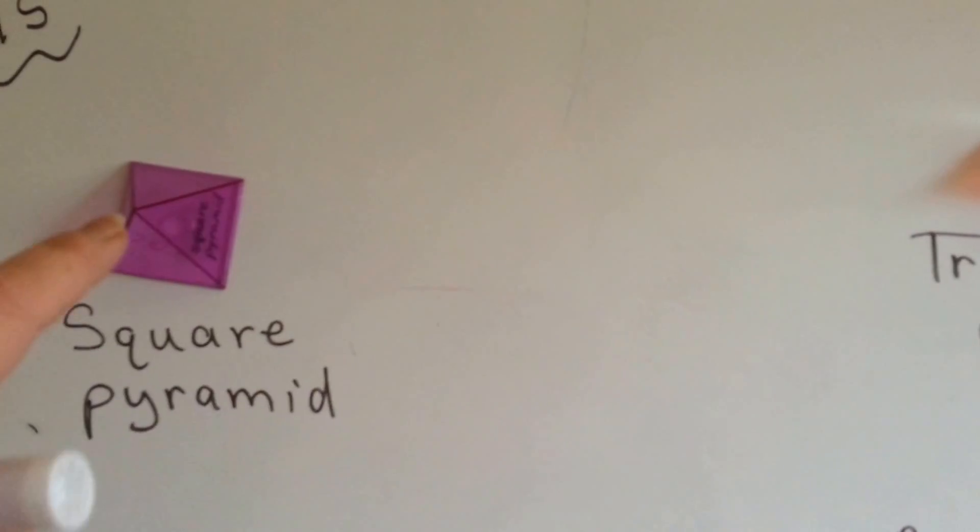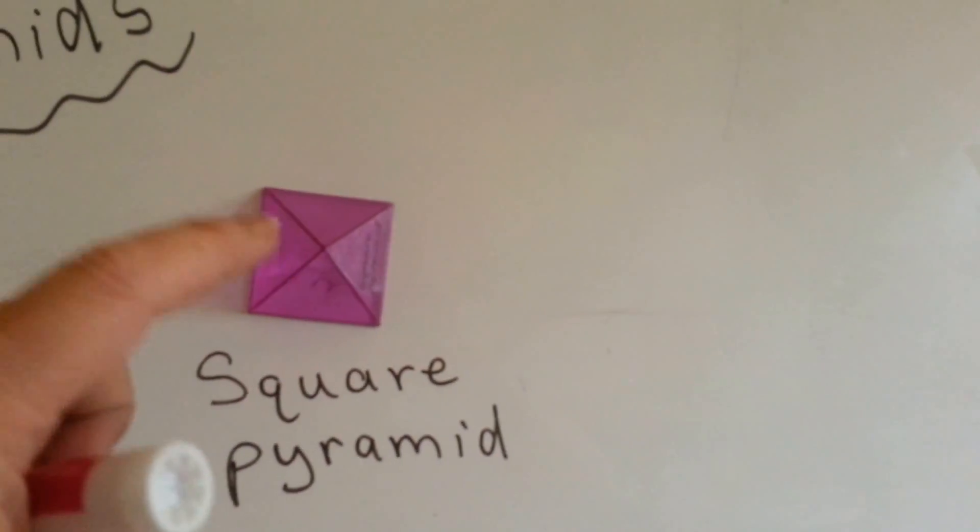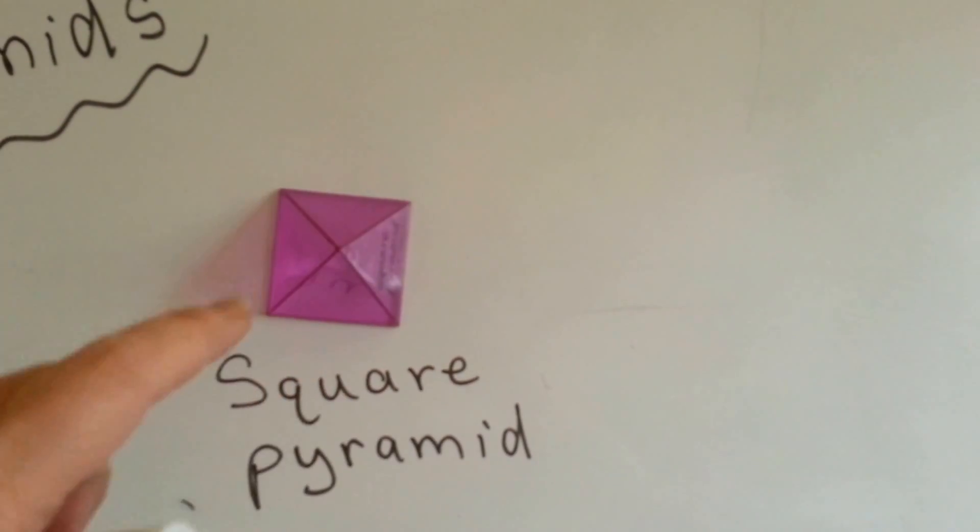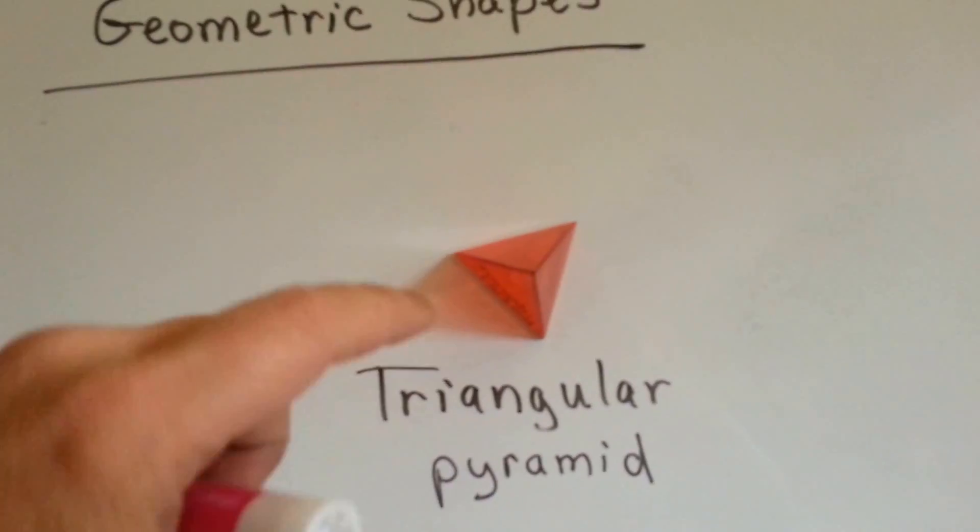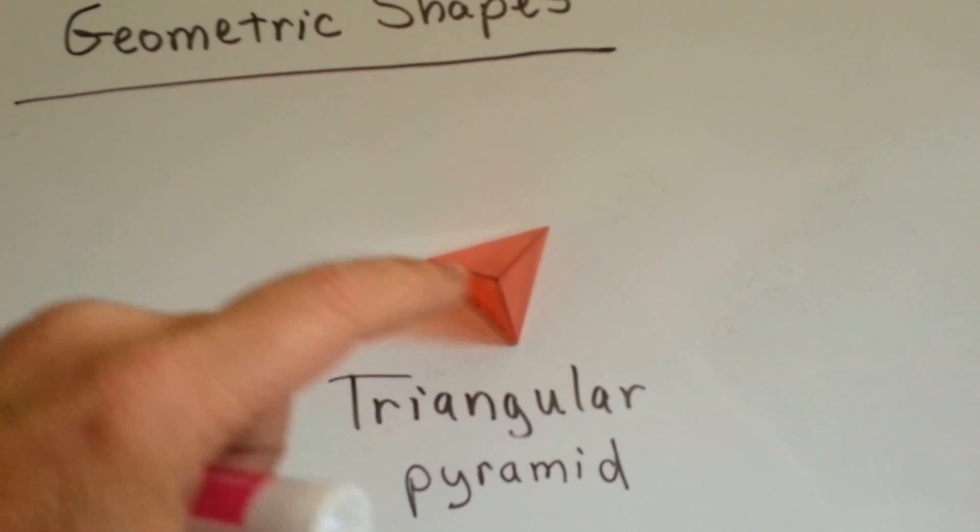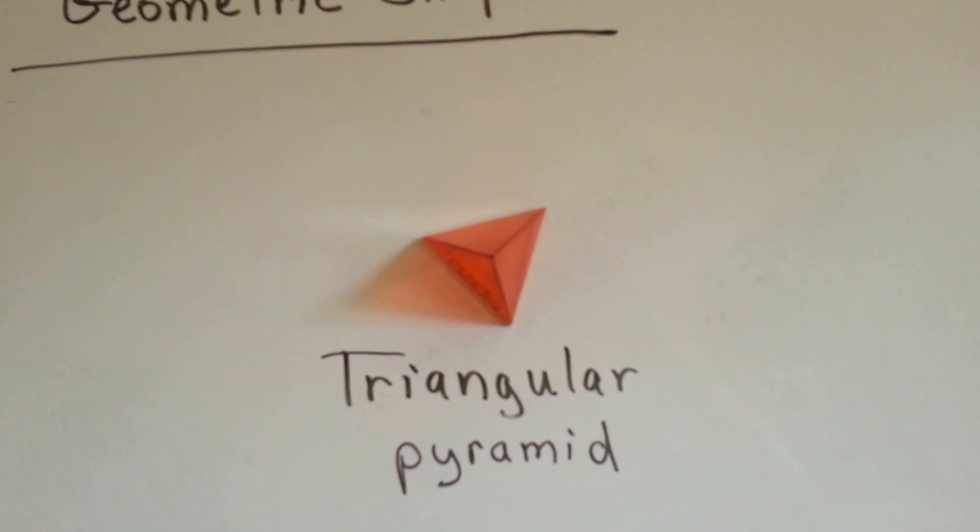Now here's the difference. The bottom of this pyramid is shaped like a square, see? And the bottom of this pyramid is shaped like a triangle.